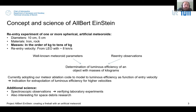With these well-known meteoroid parameters — because we created the meteoroid on Earth, on the ground — and the re-entry observations, we can then determine the luminous efficiency for such an object. We are currently adapting our meteor ablation code to model the luminous efficiency as a function of entry velocity. Therefore, this experiment will serve as an indication for the extrapolation of luminous efficiency to higher velocities, which are important for meteor science.